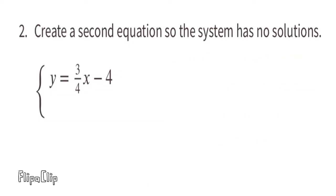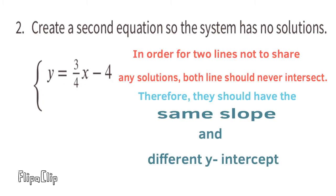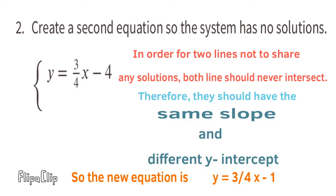Number 2: Create a second equation so the system has no solutions. In order for two lines not to share any solutions, both lines should never intersect. Therefore, they should have the same slope and different y-intercepts. So the new equation is y equals three-fourths x minus 1. It has the same slope but a different y-intercept. You can write the equation as y equals three-fourths x plus 1 if you want, as long as the y-intercept is different. What needs to be the same is the slope — y equals three-fourths x — while the last term needs to be different than the original.